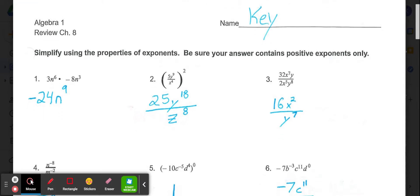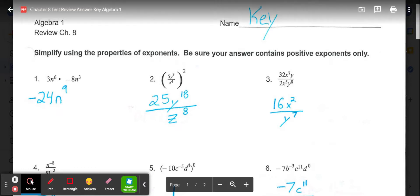Looking at our first set of problems, directions tell us to simplify using the properties of exponents. Be sure your answers contain positive exponents only. In our first problem, 3n to the 6th multiplied by negative 8n to the 3rd, you want to multiply the 3 and negative 8 out in front to give us negative 24, and then add the 6 and 3 for the powers, so we would have negative 24n to the 9th.